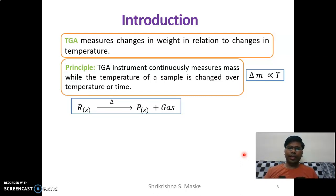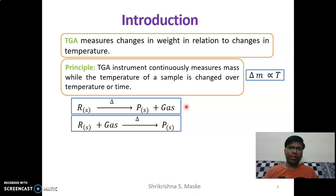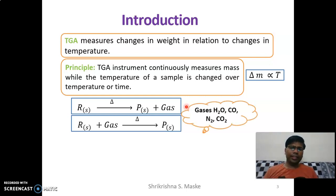One possibility is that a sample upon heating gets converted into a product and some kind of gas is released. At the same time, there can be a reverse reaction — the sample may absorb some gas upon heating and form a product. In the first case, the mass of the sample decreases; in the second case, mass can increase. Gases commonly involved include H₂O, CO, N₂, CO₂, O₂, etc.